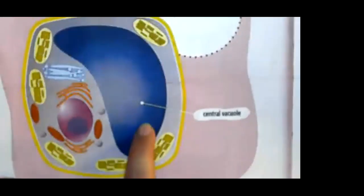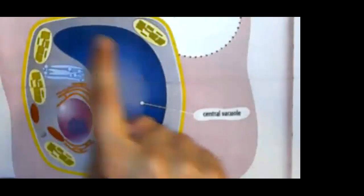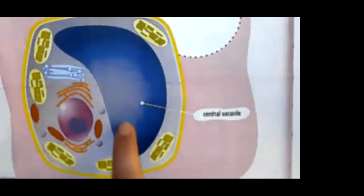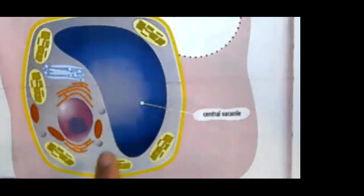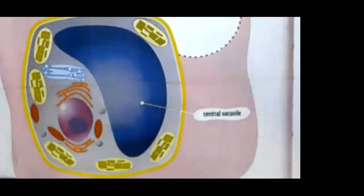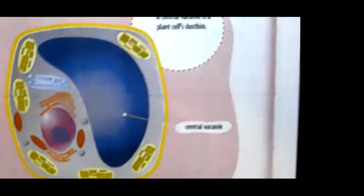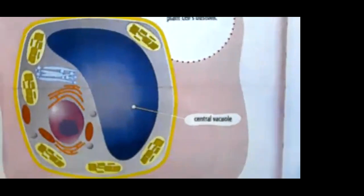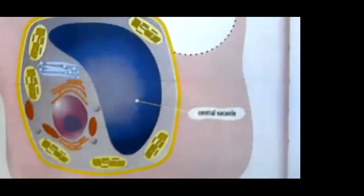Here is the central vacuole inside that cell. Notice how large it is — very different from the animal cell in which the vacuole is multiple small round circles. Here we have one large section that takes up almost the entire cell. A central vacuole is like the plant cell's dust bin or trash can.